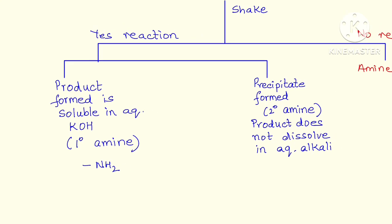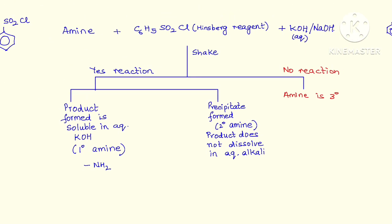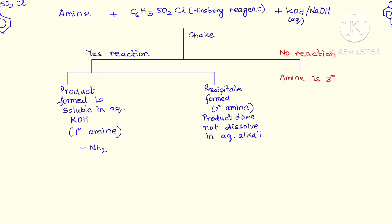On the other hand, if the reaction does take place but you see a precipitate being formed or separating out, meaning the product formed on the reaction of an amine with Hinsberg reagent is insoluble in the alkali, then you have a secondary amine at hand, meaning the functional group is NH.